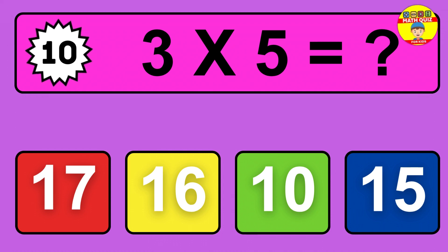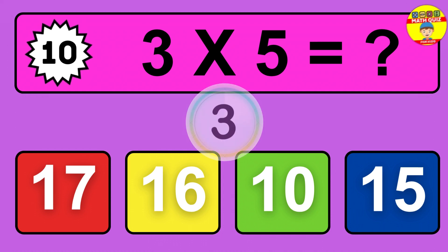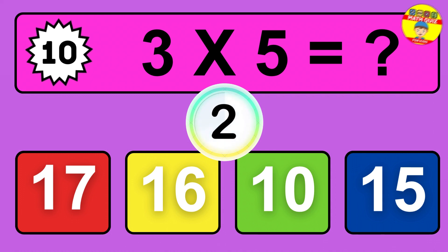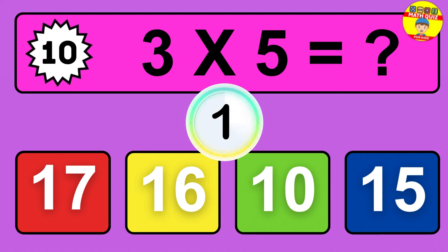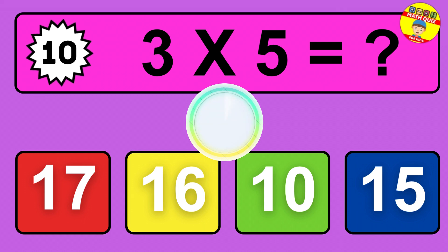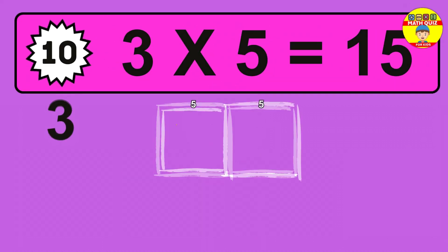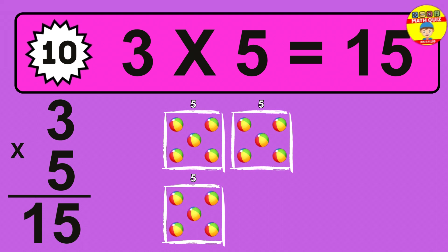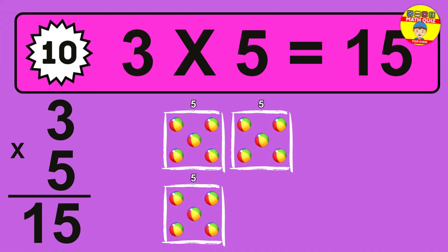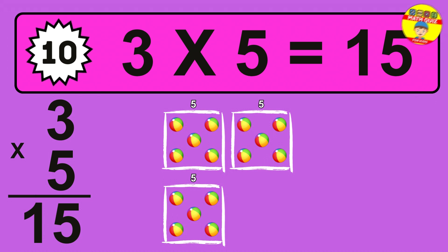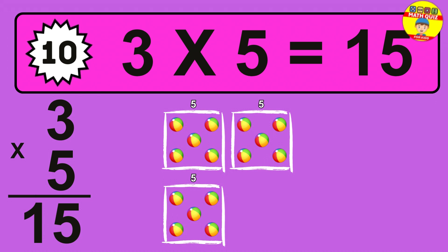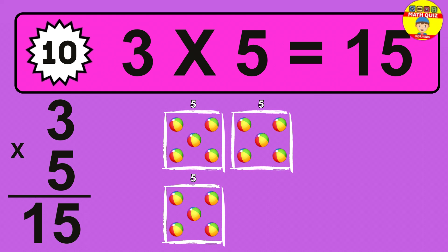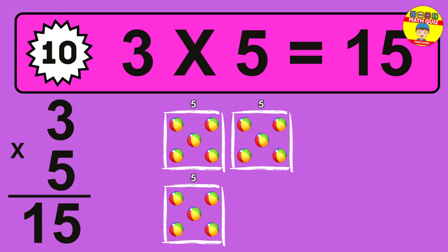Question 10. 3 times 5 equals what? The answer is 3 times 5 is 15. To calculate, we have 3 groups with 5 balls each one. So how many balls do we have? 15 balls.